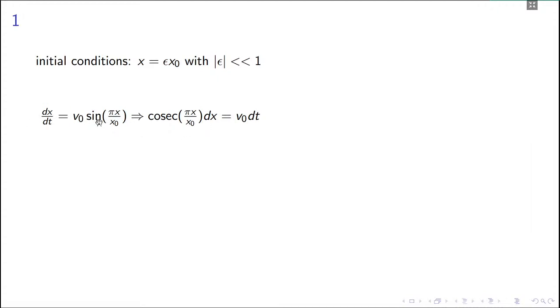Now you just integrate with the initial conditions from εx₀ to x and 0 to t. The integral of this one is log of cosec x minus cot x, so it becomes this one. And then the factor of π/x₀ will come because it's there inside the trigonometric term here.